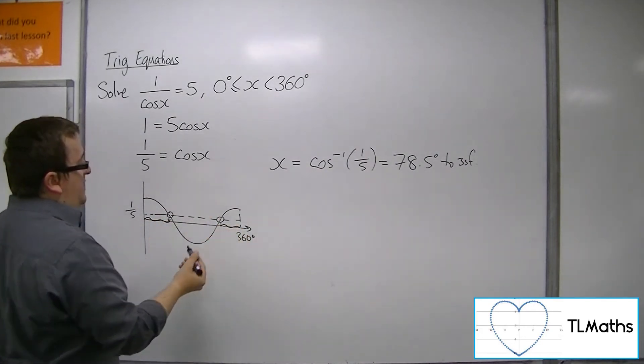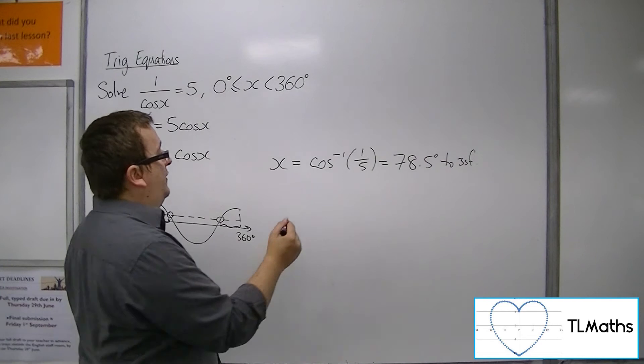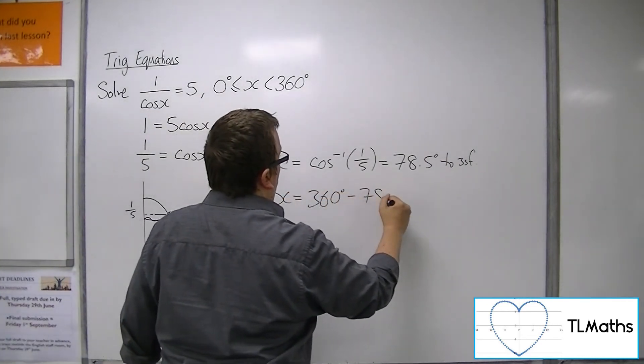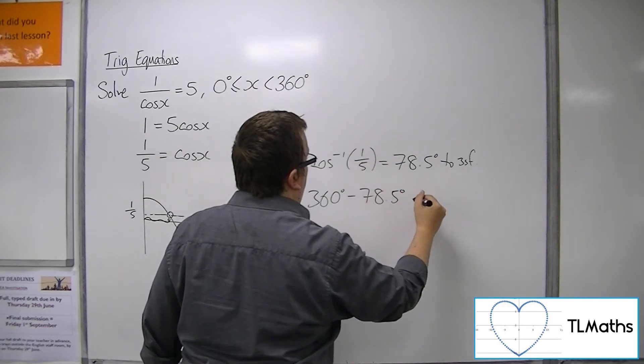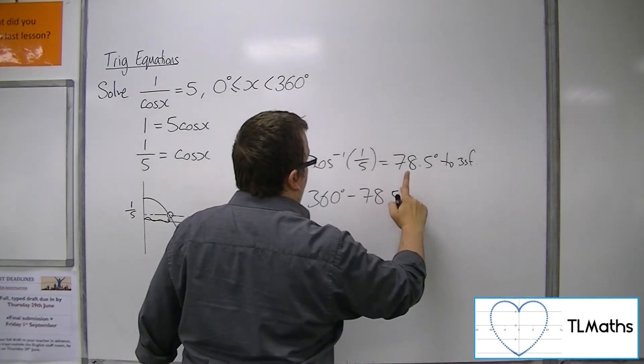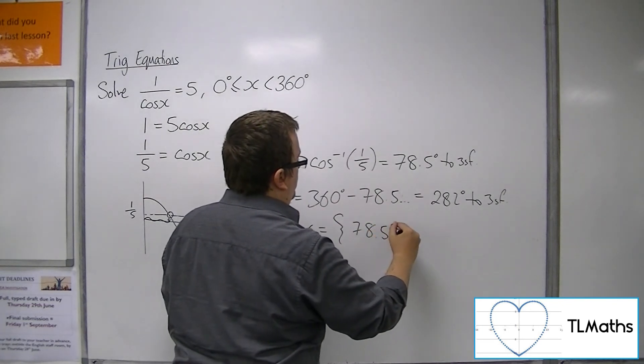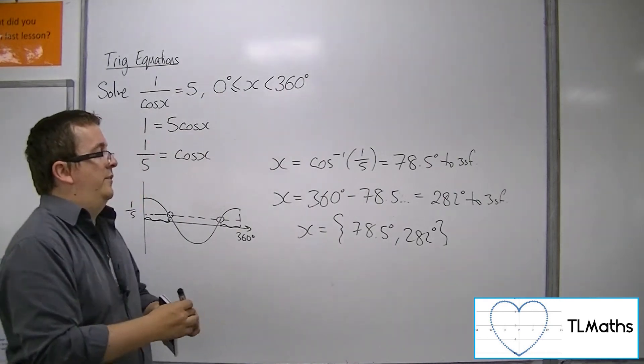This is 78.5 degrees away from 360. So x is 360 take away 78.5 degrees, which is 282 degrees to 3 sig fig. So x is 78.5 degrees and 282 degrees to three significant figures.